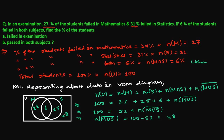So 48% of students were not failed in mathematics and statistics — those students who passed in both subjects. The students who failed in the examination: 21 plus 6 plus 25 equals 52. So 52% of students failed and 48% passed.